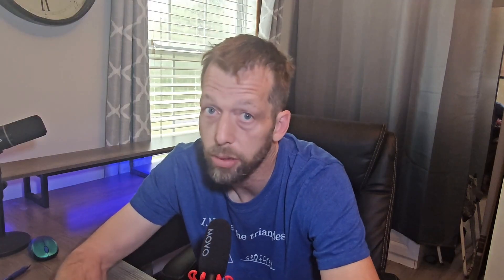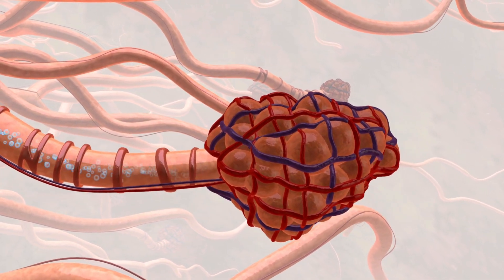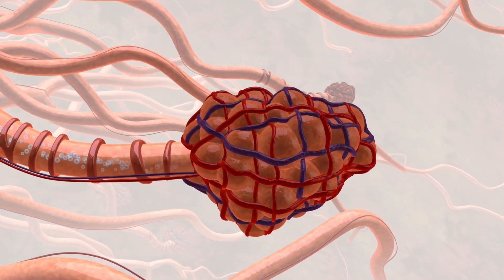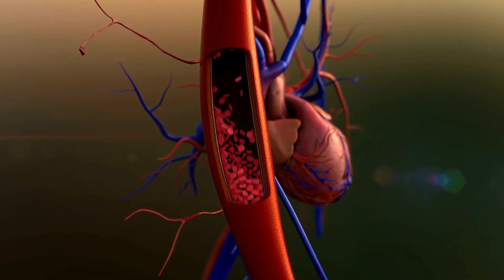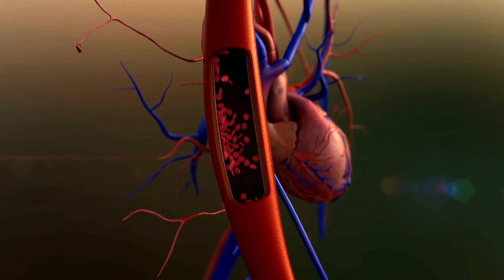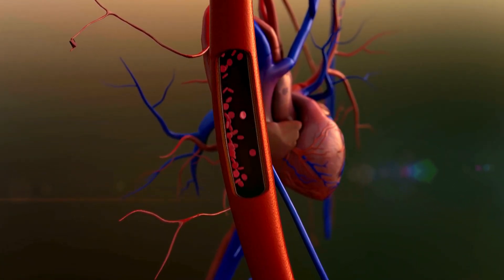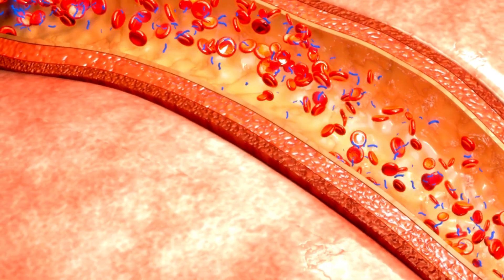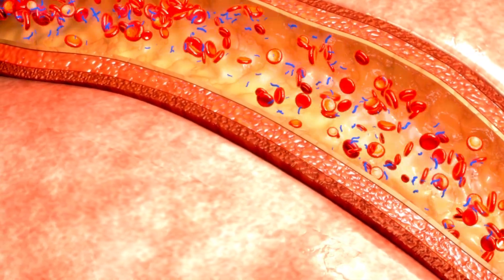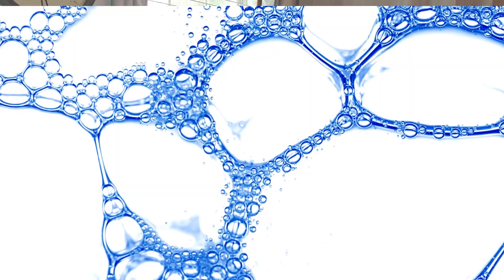Let's start with categories. We know that oxygen makes it to the cell via the bloodstream. It leaves the lungs, goes into the blood, the heart pumps that blood, and then it distributes it out throughout all the blood vessels — and that's how oxygen makes it from the lungs to the cells.